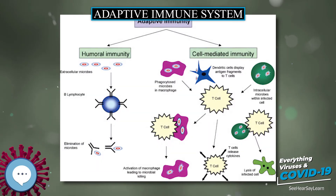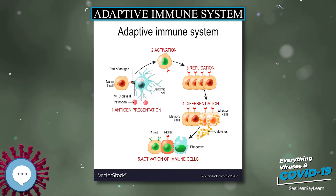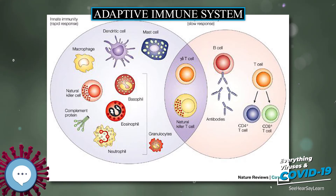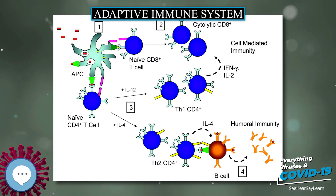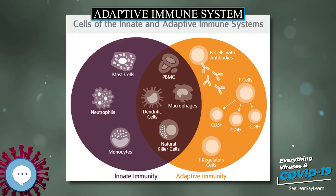Dendritic cells, B cells, and macrophages are equipped with special co-stimulatory ligands recognized by co-stimulatory receptors on T cells, and are termed professional antigen-presenting cells (APCs). Several T cell subgroups can be activated by professional APCs, and each type of T cell is specially equipped to deal with each unique toxin or microbial pathogen. The type of T cell activated and the type of response generated depends, in part, on the context in which the APC first encountered the antigen.